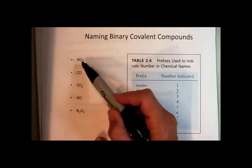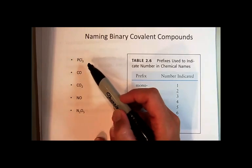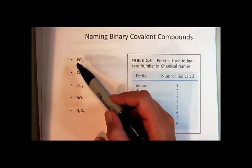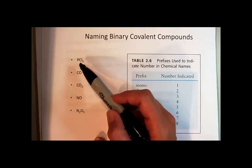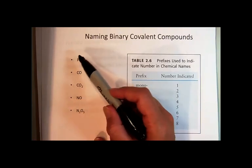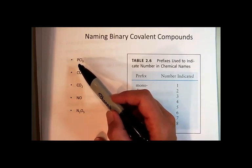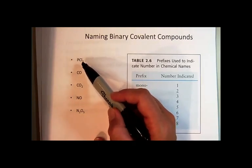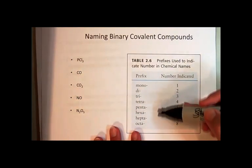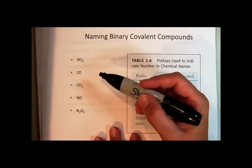You look at the two elements. You look at the periodic table, and you recognize phosphorus is a nonmetal. Chlorine is a nonmetal. This must be a covalent compound. I need to use the naming system for covalent compounds to name this. If I was using the ionic system, this would be phosphorus chloride, but it's not an ionic compound. It's a covalent compound. We never know the number of the different types of atoms in the compound, so we have to use prefixes. We don't use prefixes for ionic compounds.